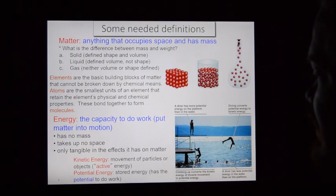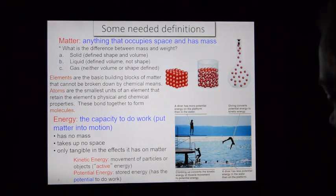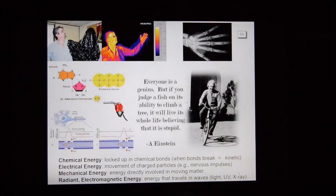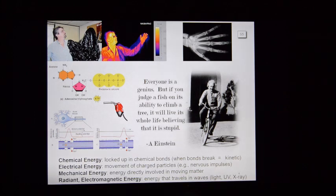In the world of energy there are two formats: kinetic energy and potential energy. Kinetic energy is directly involved in doing work, while potential energy is a storage form. In the world around us, there are forms of energy worthy of our conversation: chemical energy, electrical energy, mechanical energy, and radiant or electromagnetic energy. Chemical energy is a potential energy — a storage — locked up in bonds, and when those bonds break, energy is released.